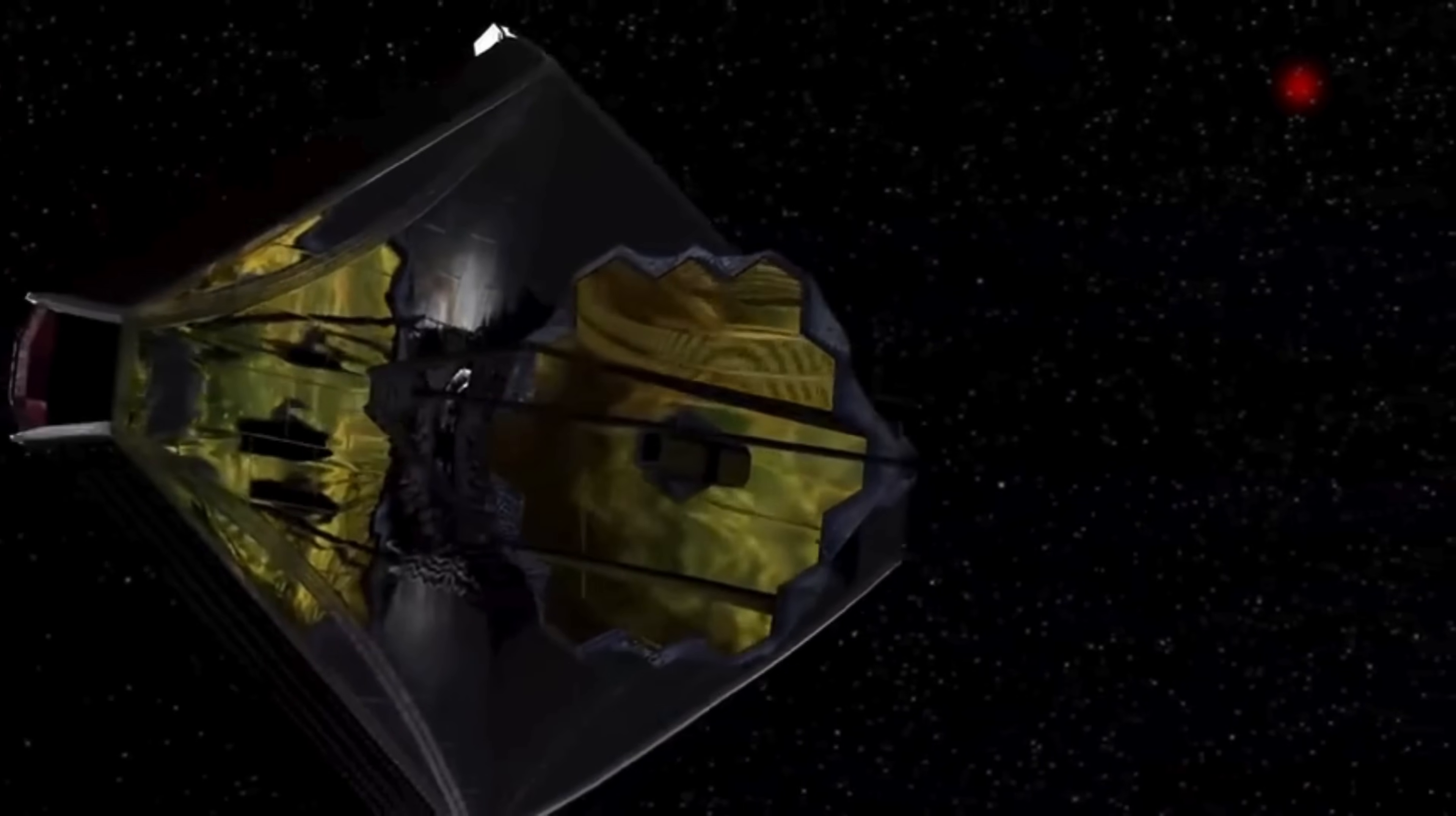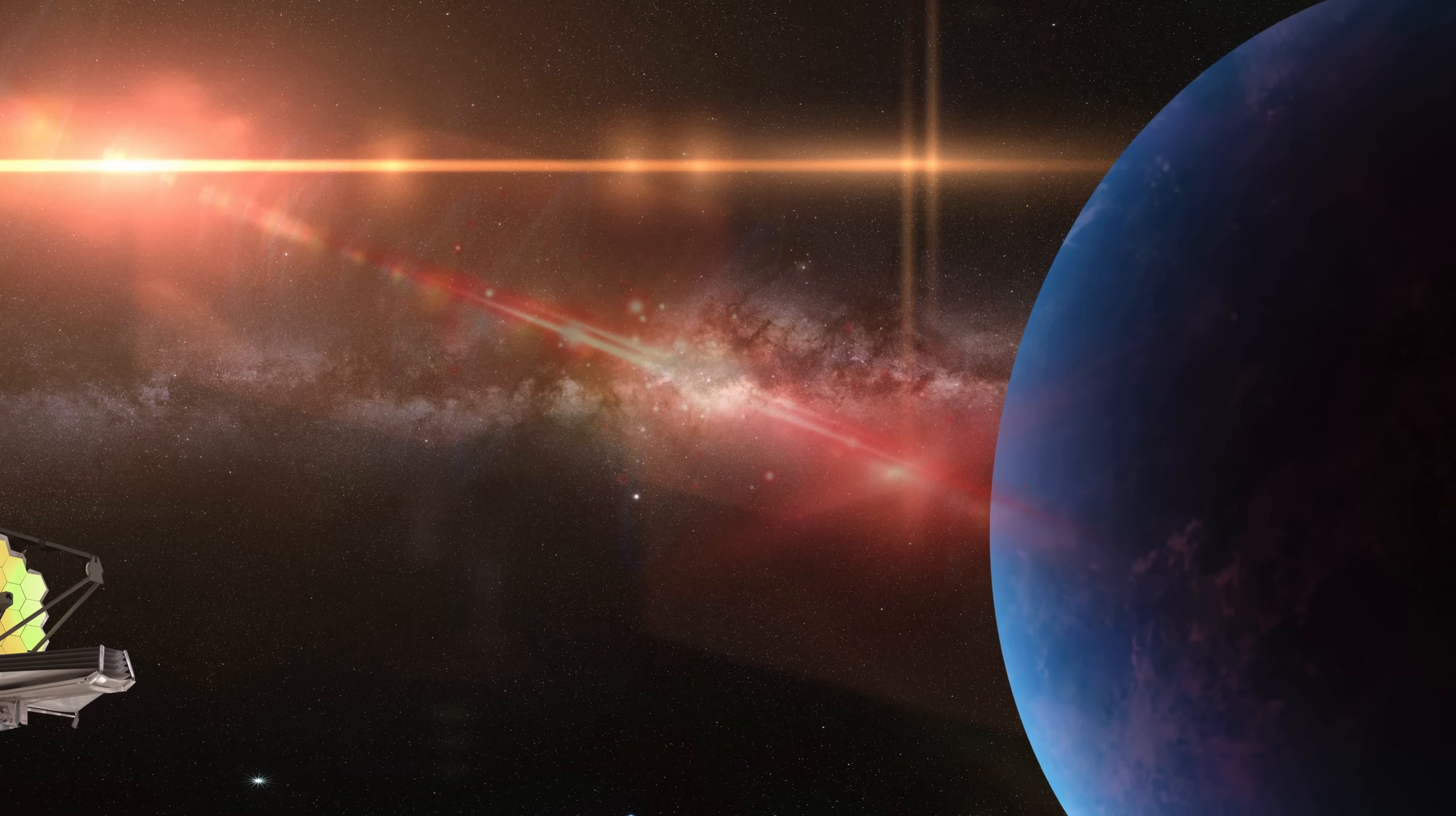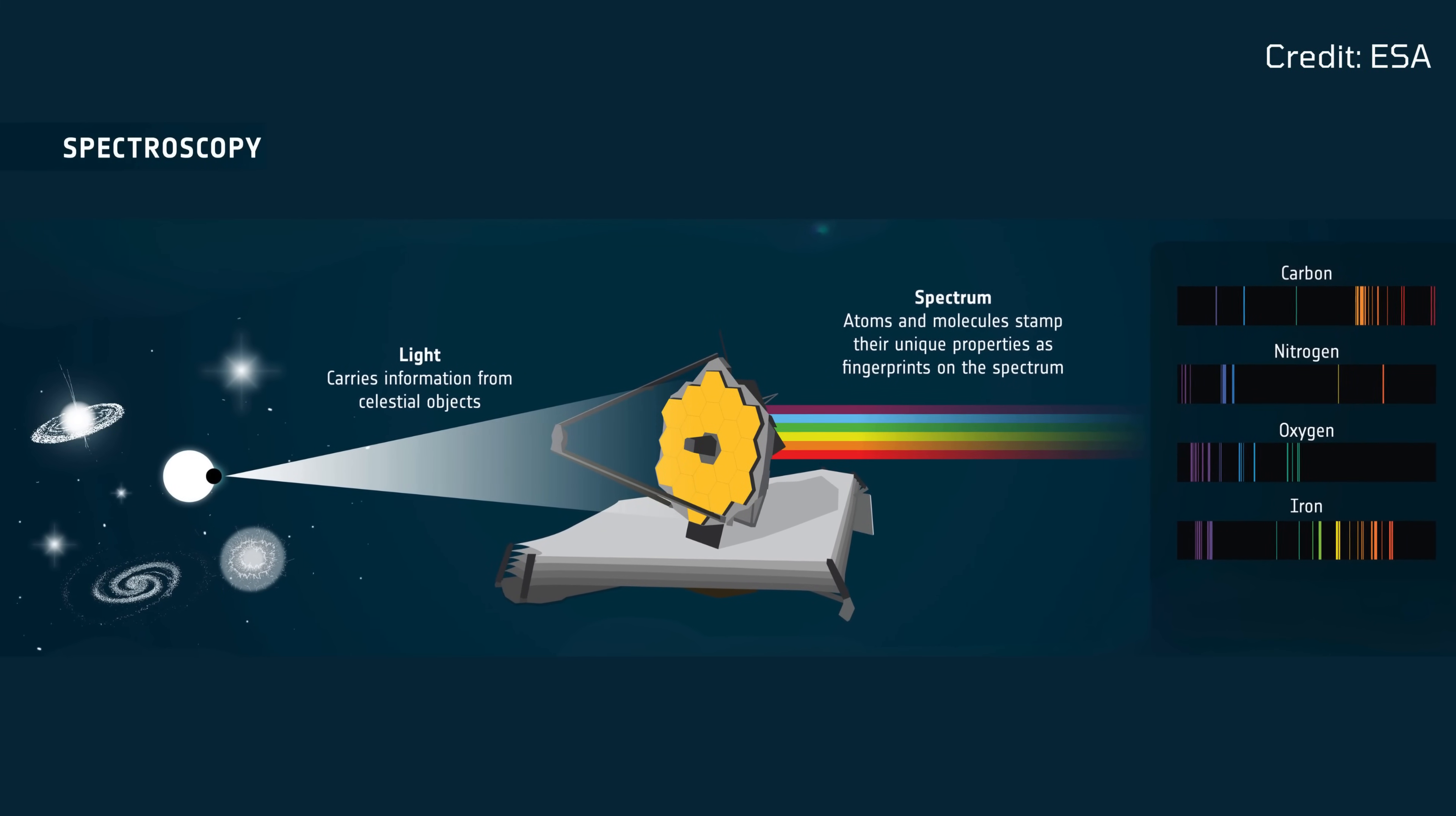When K-218b passes in front of its star, some of its starlight passes through the planet's atmosphere and reaches us. This starlight carries the chemical fingerprint of the gases present in the atmosphere. Webb's advanced instruments can break this light into its wavelengths, a process called spectroscopy.